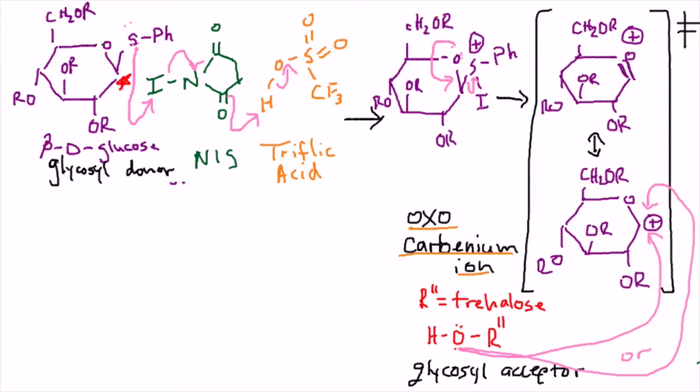It's worth mentioning that this intermediate that the glycosyl donor becomes is the oxocarbenium ion. Yeah, that's a $6 word. Organic chem is absolutely chock full of them.